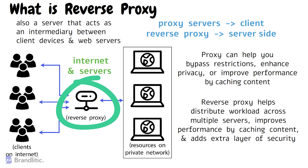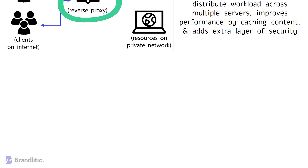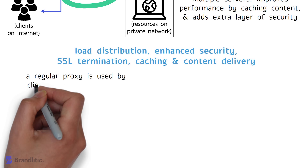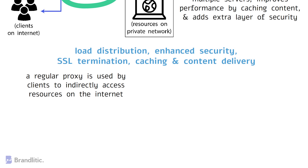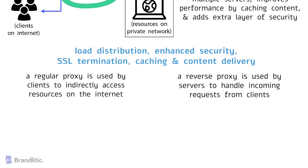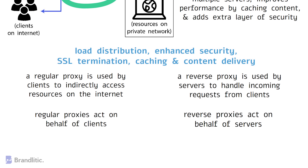Furthermore, some of the known advantages of using a reverse proxy include load distribution, enhanced security, SSL termination, caching, and content delivery. To summarize: a regular proxy is used by clients to indirectly access resources on the internet, while a reverse proxy is used by servers to handle incoming requests from clients. One can say that regular proxies act on behalf of clients, while reverse proxies act on behalf of servers.